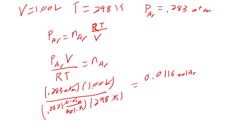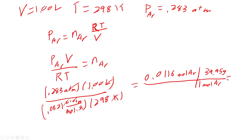The problem asked for grams, so using the molar mass of argon (39.95 g/mol): 0.0116 moles × 39.95 g/mol = 0.463 grams of argon. That would be our mass.